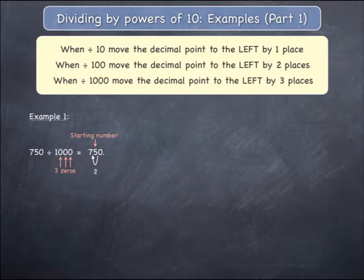The second jump moves it to between the 7 and the 5. The third and final jump moves it to immediately before the 7, giving an answer of 0.75. 750 divided by 1000 equals 0.75.